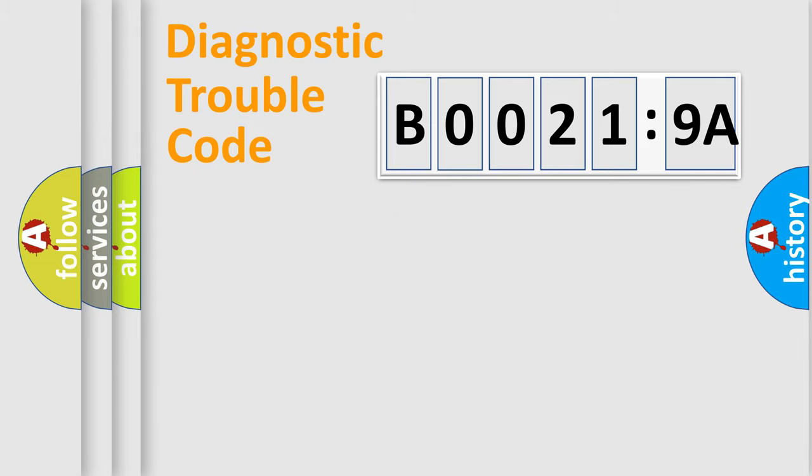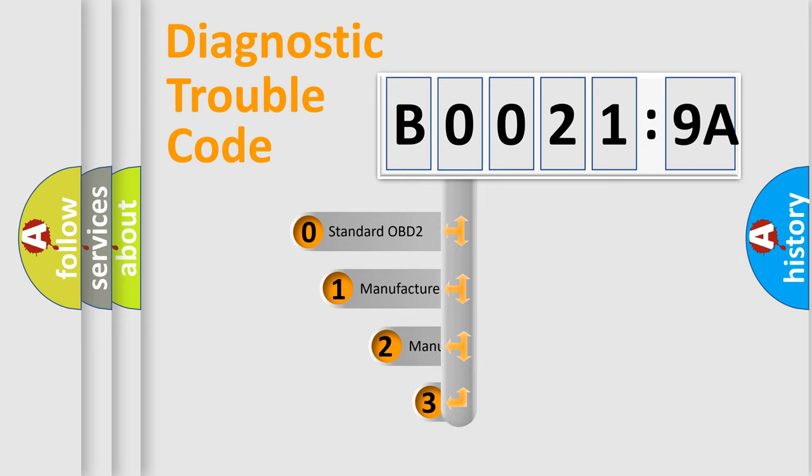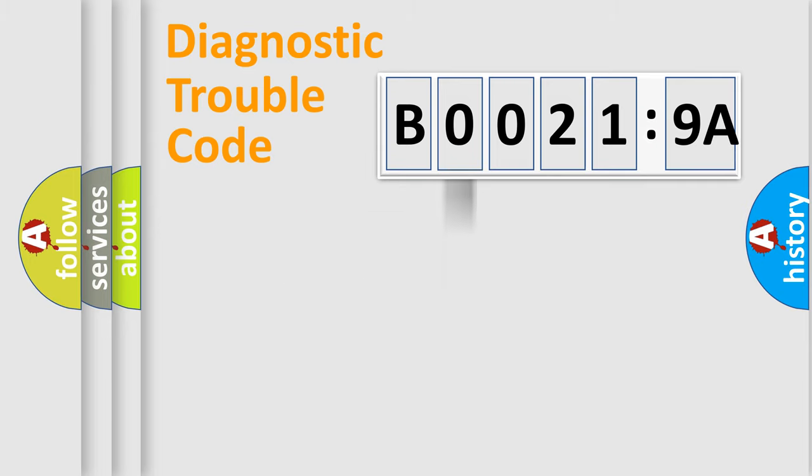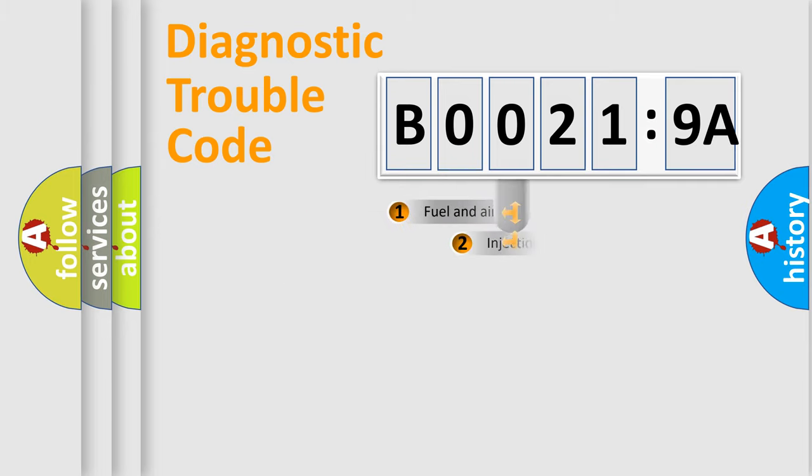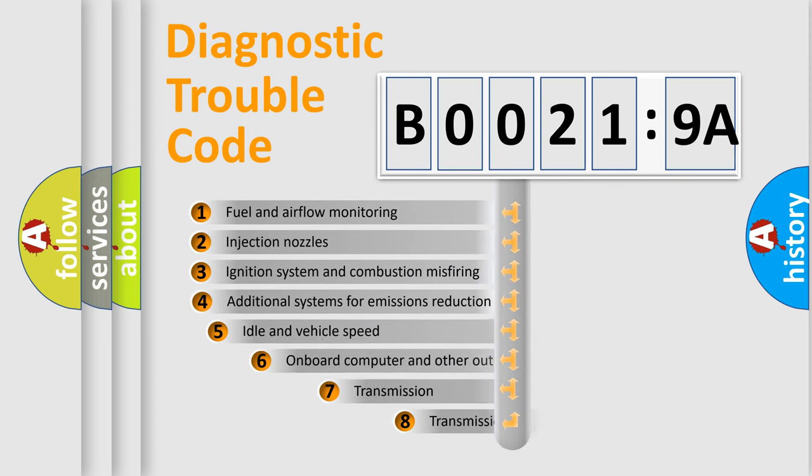The third character specifies a subset of errors. The distribution shown is valid only for the standardized DTC code. Only the last two characters define the specific fault of the group. The add-on to the error code serves to specify the status in more detail.